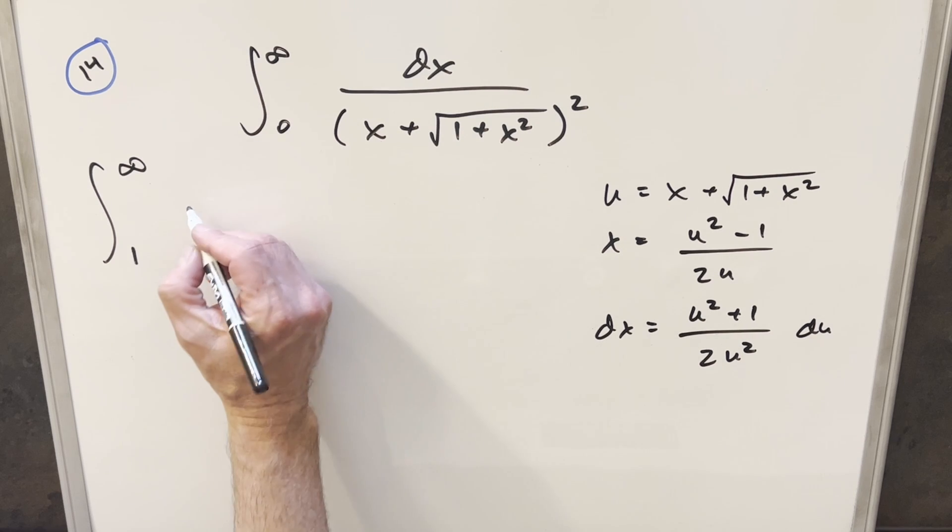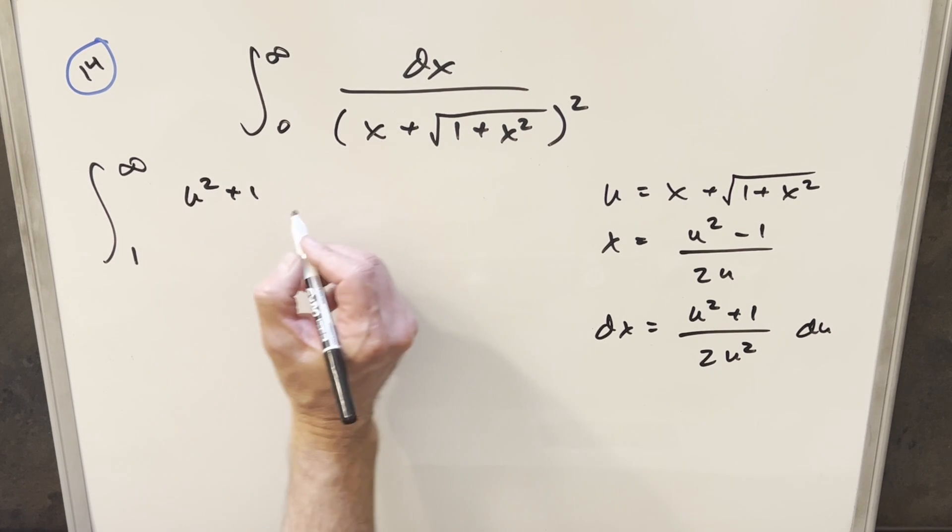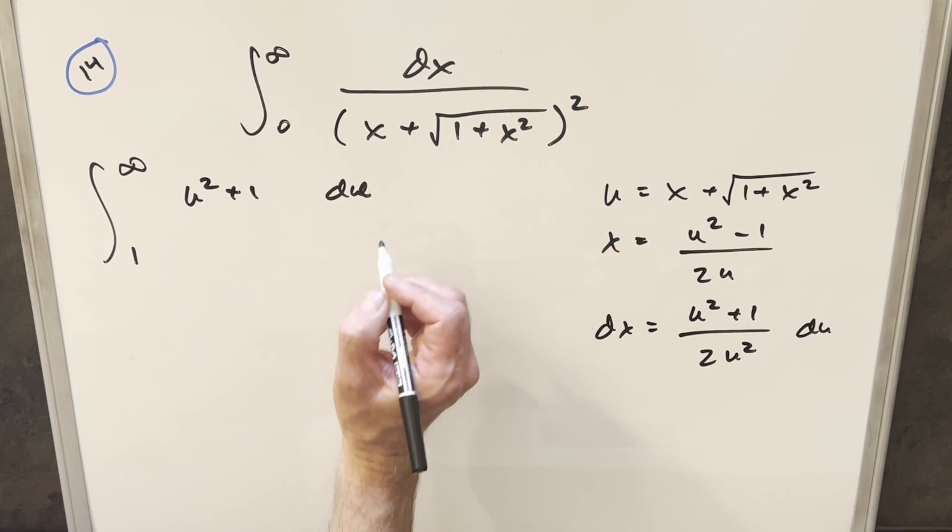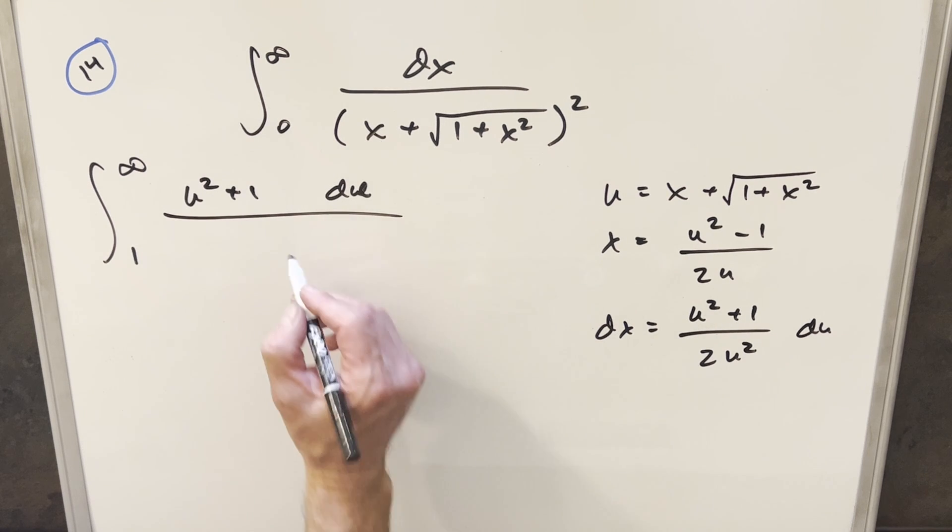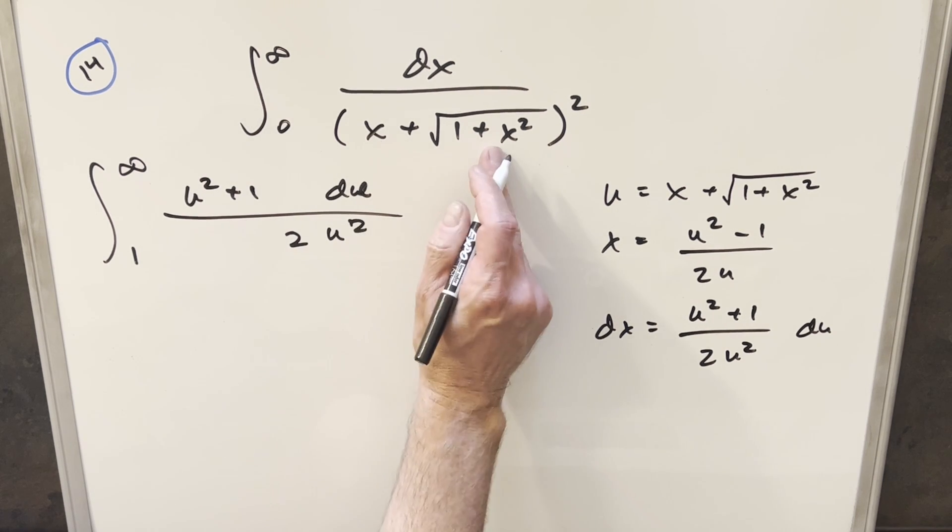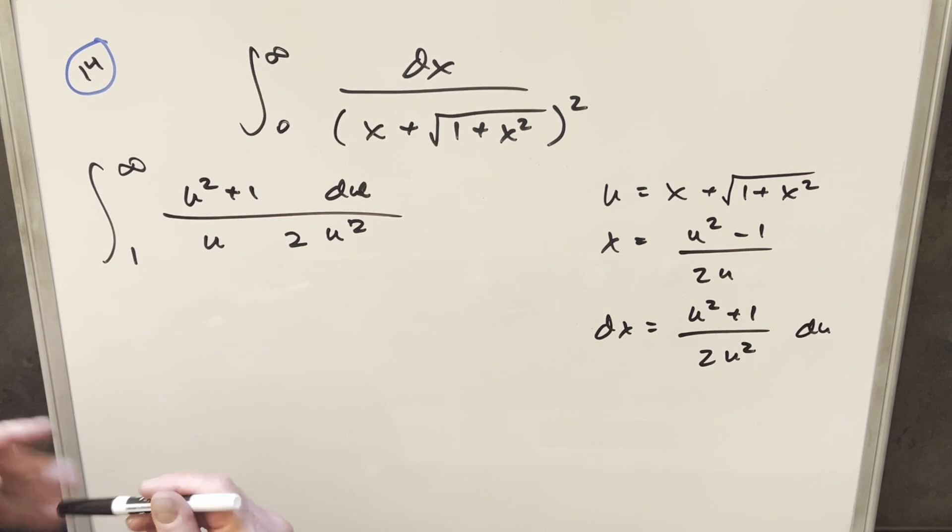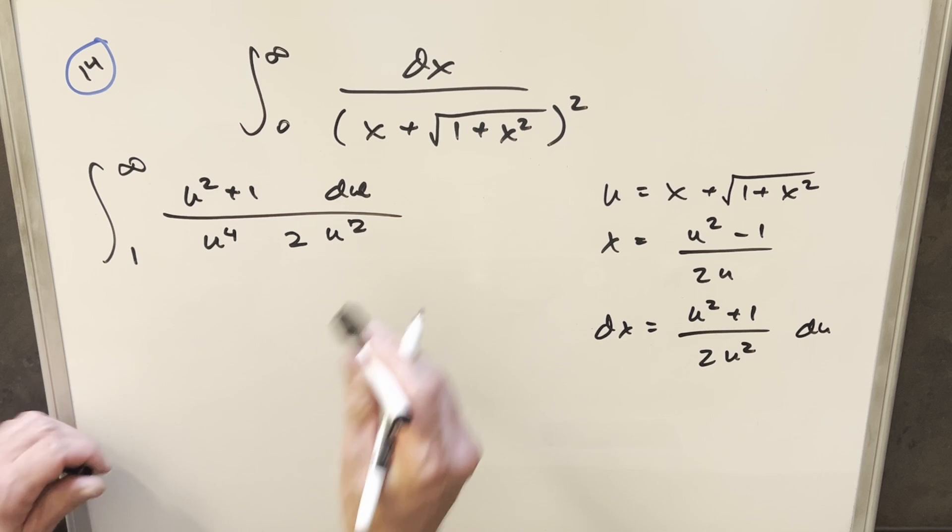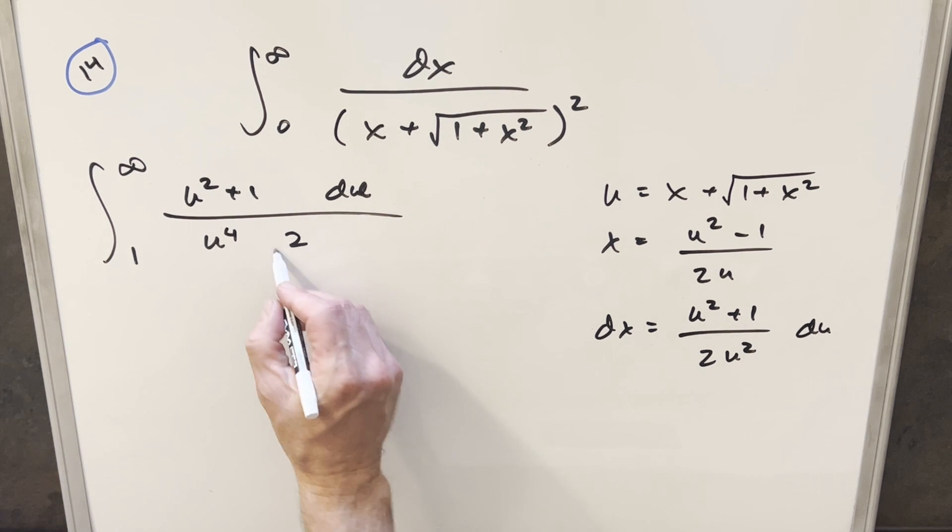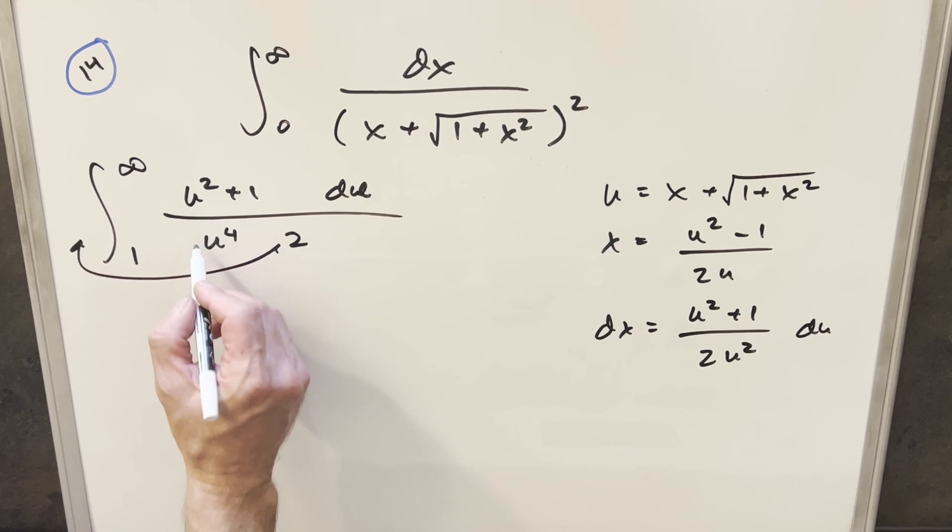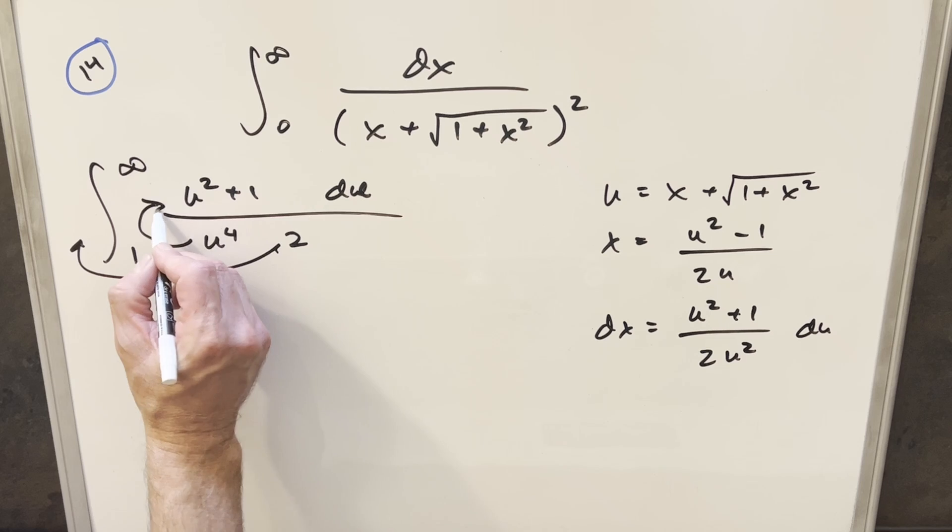For the dx, we're going to have all this stuff. So it's going to become u squared plus 1 du. And then we'll have a 2u squared here in the denominator. And then this thing is going to become u squared. Cleaning this up a little bit. First, I can take u squared times u squared and write this as a u to the 4th right here and get rid of this one. Then let's take this 2 and bring it out front as a 1 half and divide this u to the 4 into the numerator.